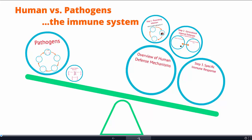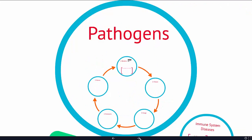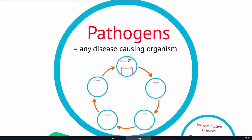In this set of lectures, we're going to look at one of the most interesting human systems: the immune system. This is how our body fights off pathogens. We need to start out with defining pathogens — pathogens are any disease-causing organism, and there are a variety of different groups that cause disease.